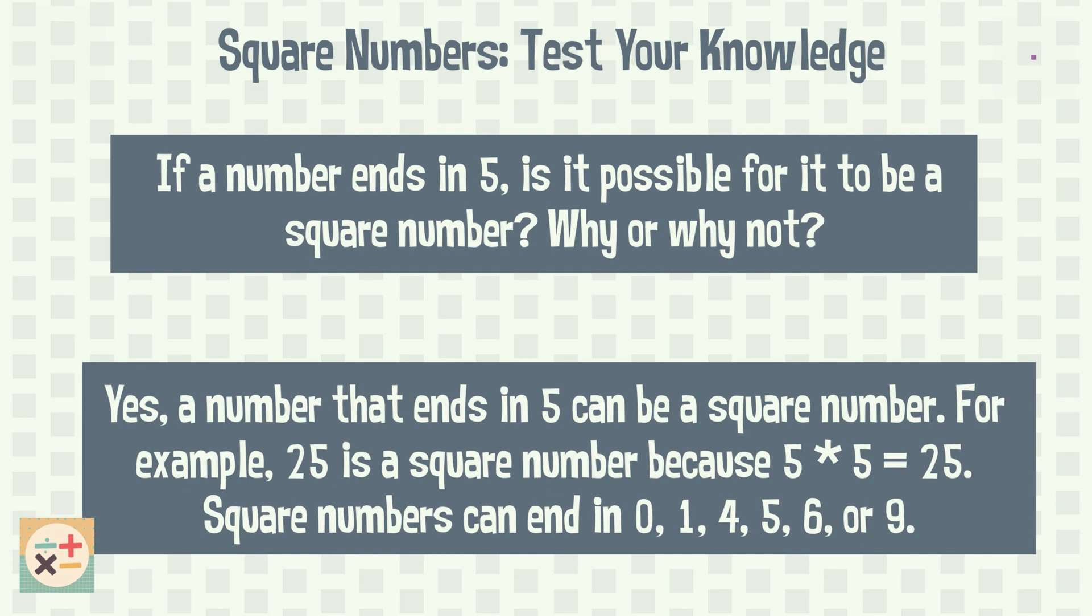Yes, a number that ends in 5 can be a square number. For example, 25 is a square number because 5 multiplied by 5 equals 25.